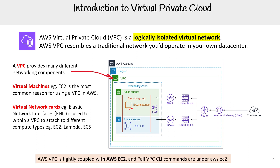AWS VPC is tightly coupled with EC2, so all VPC CLI commands are under the AWS EC2 namespace. Just understand why that is — you can't separate VPC from EC2, even though they're treated in the console as two separate things.